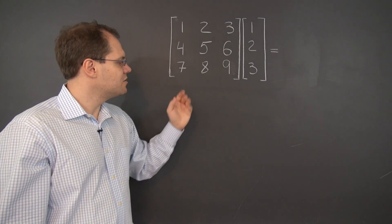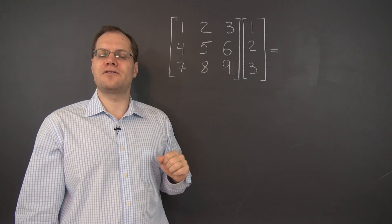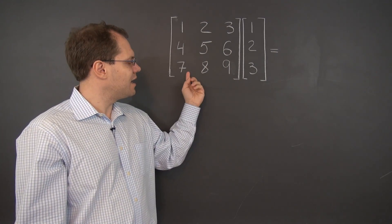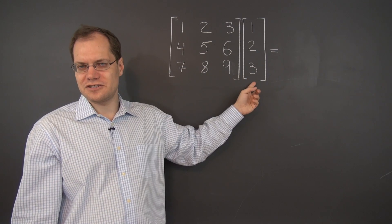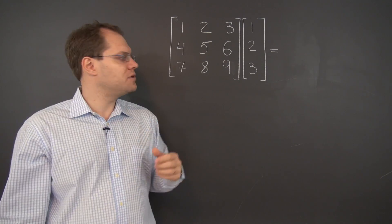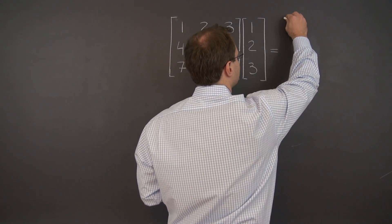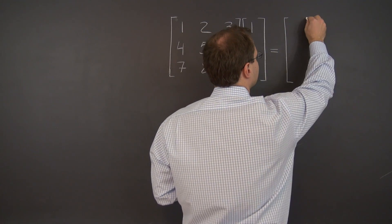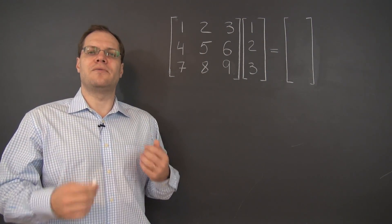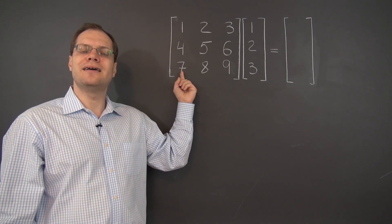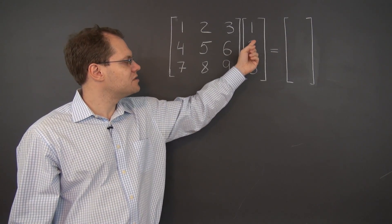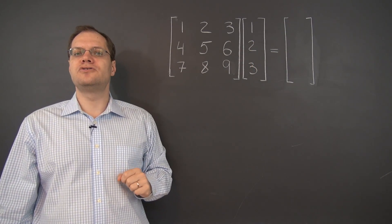The answer to this matrix product will be another 3x1 matrix, because we're finding a single linear combination of the columns of the matrix on the left where the coefficients come from the matrix on the right. So the answer will be a single column, or 3x1 matrix. This matrix product is the linear combination of the columns of the left matrix where the coefficients come from the right matrix: 1, 2, and 3.